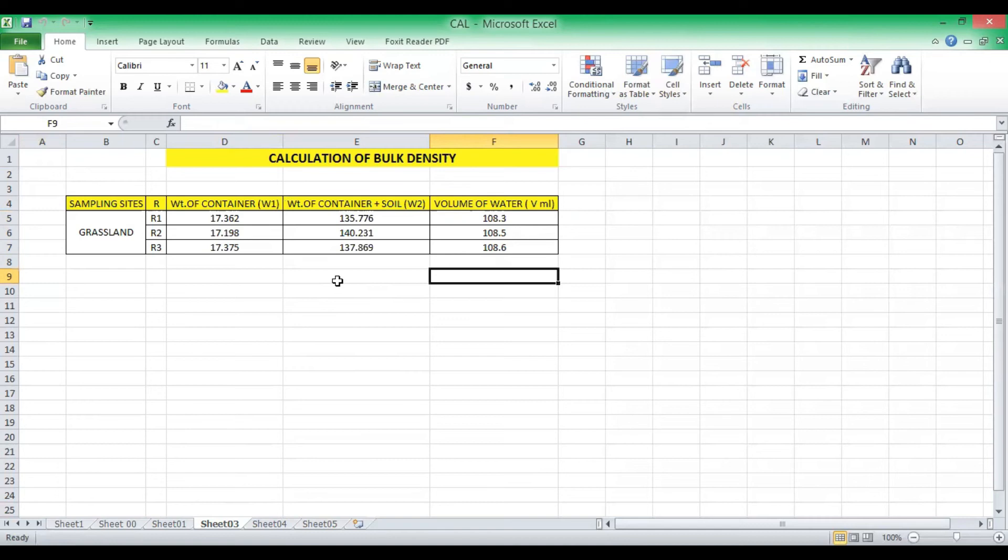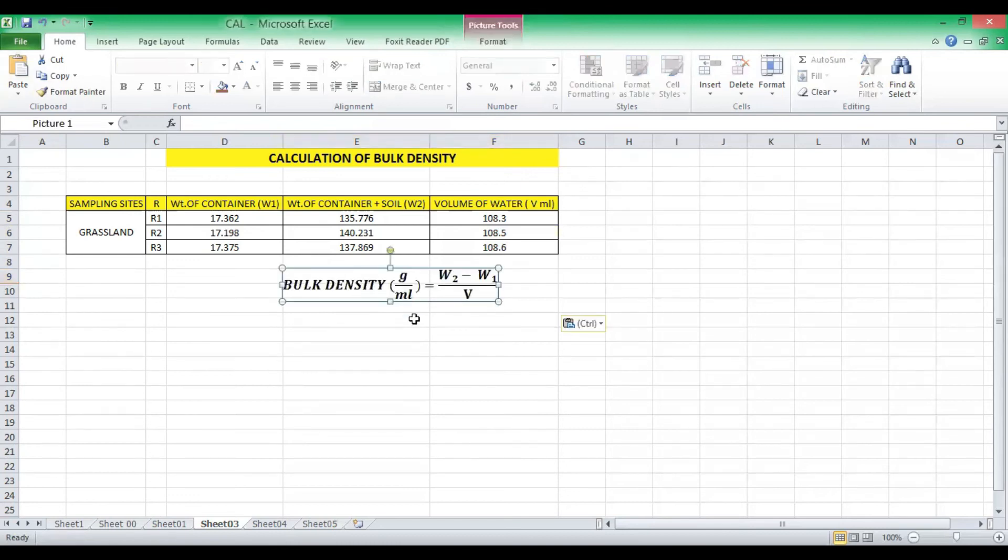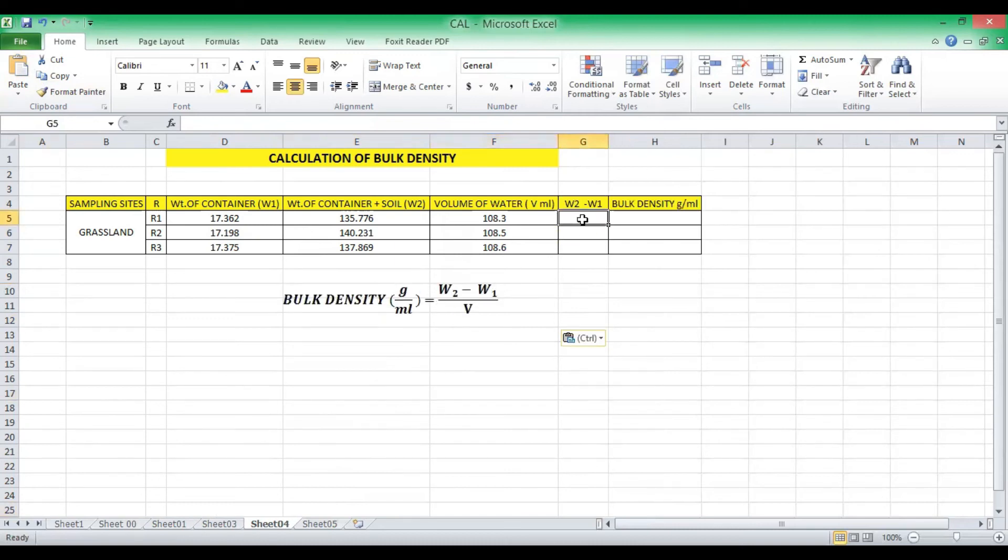Now we have obtained all the three different values—that is W1, W2, and V. So if you remember, the formula for bulk density is W2 minus W1 divided by V. So it's very simple calculation. Just put an equal sign. W2 is the weight of the container plus the soil, minus the weight of the container for all three different replicates. Then just drag it. Then bulk density is weight of the soil, which is W2 minus W1, divided by the volume of water that is needed or required to fill the container, which is this value. So just press enter.